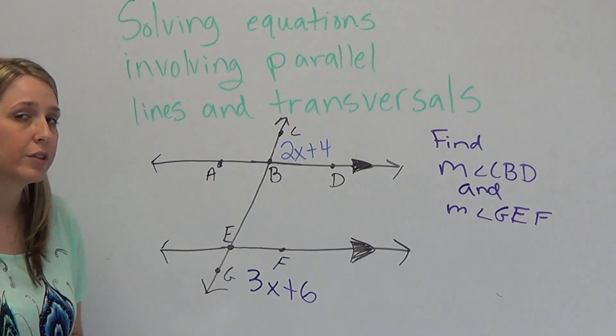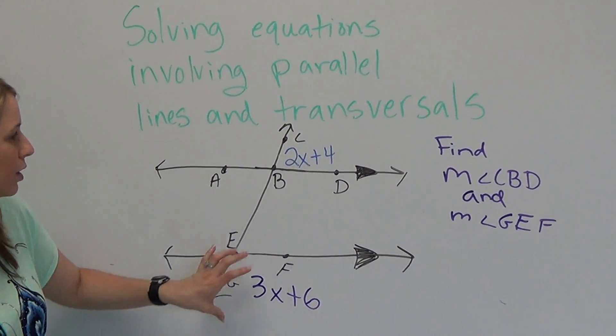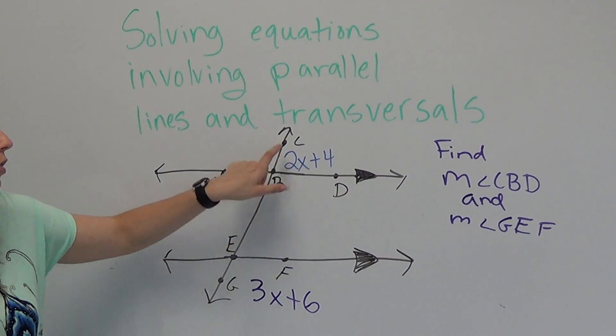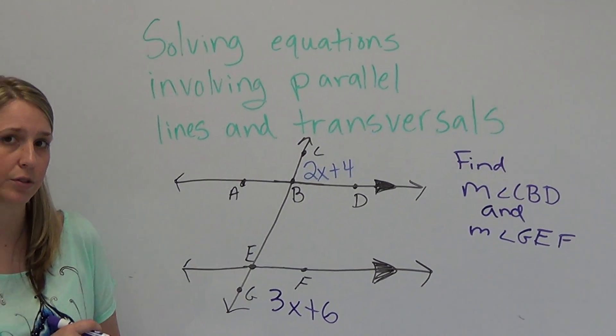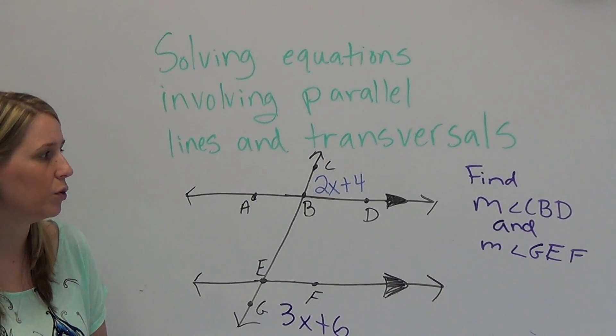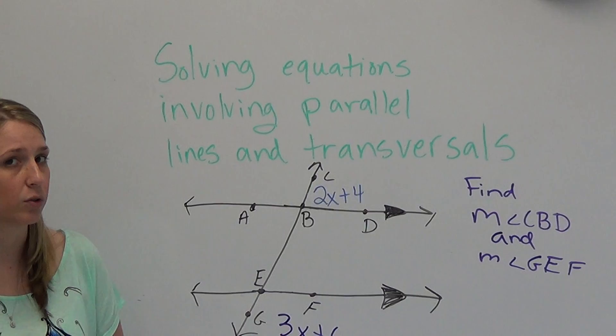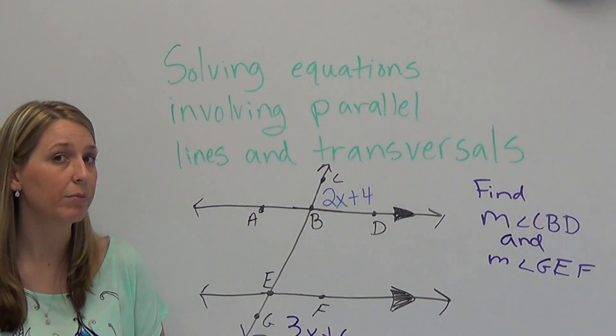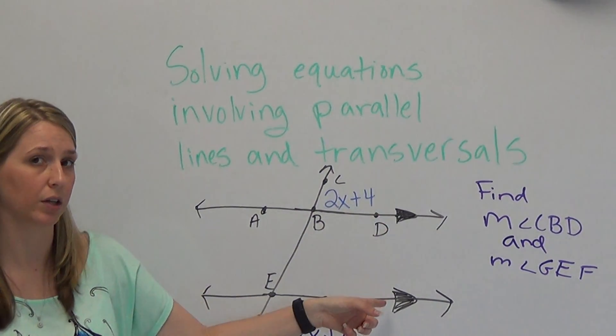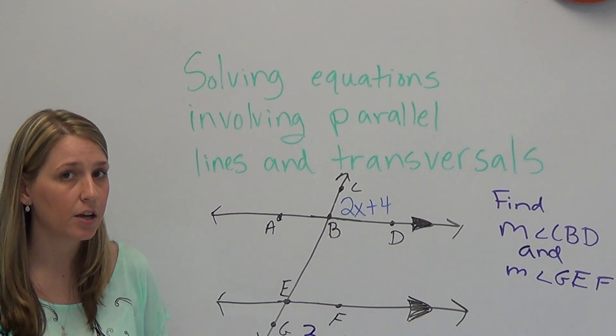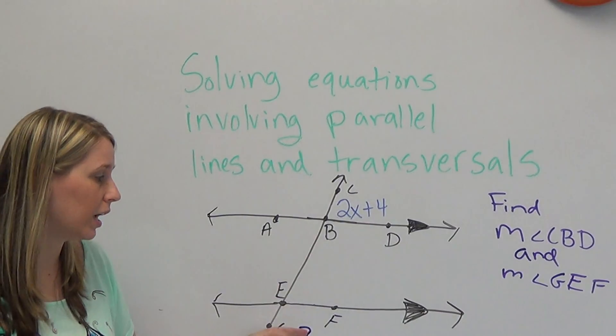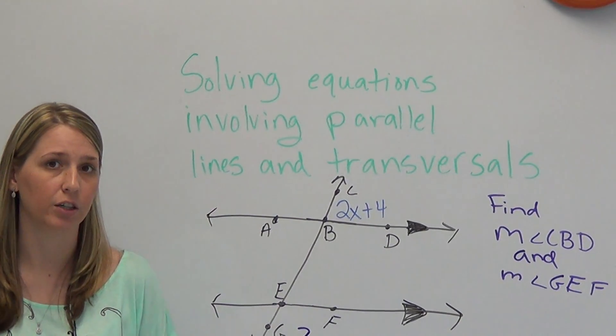Now, first we have to determine what type of angles they are. They're both exterior, and they're on the same side of the transversal, so they're same side exterior angles. Now remember from our last video, same side exterior angles are not congruent, but supplementary when the lines are parallel. So these are supplementary. Supplementary means they add to be 180. So instead of setting them equal to each other, we're going to add them together and set them equal to 180 degrees.